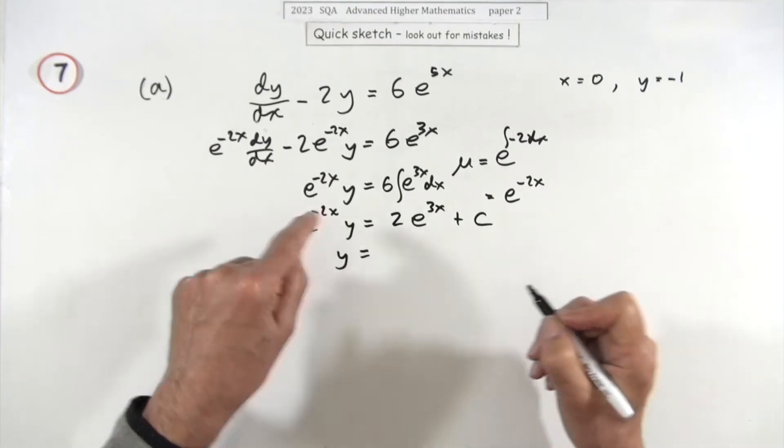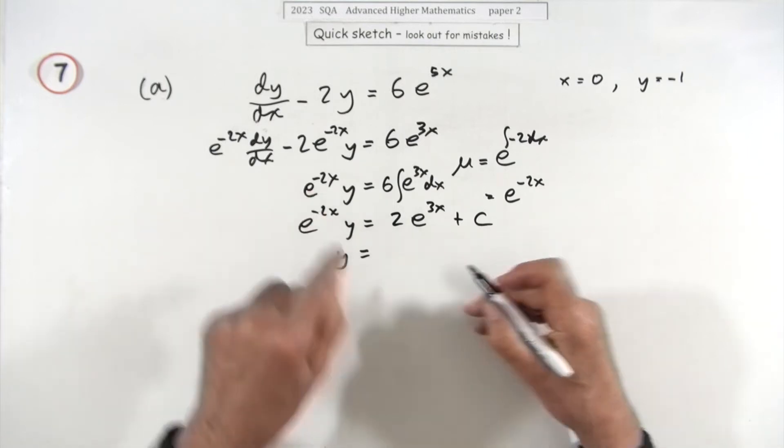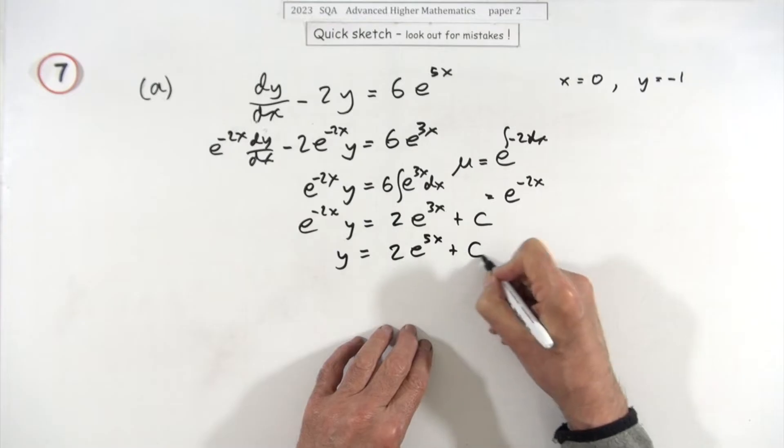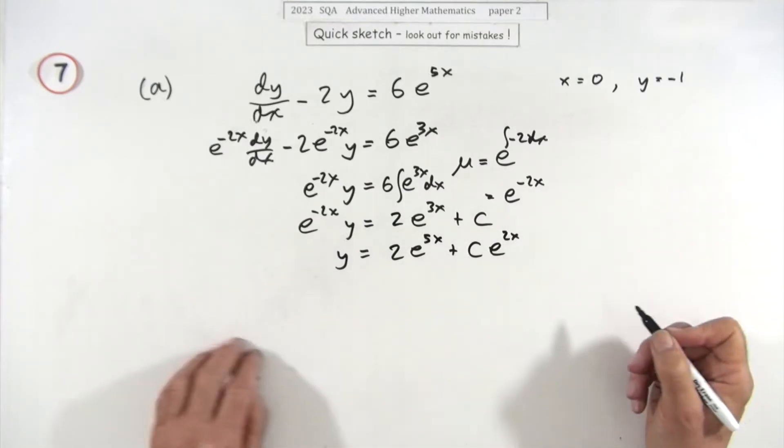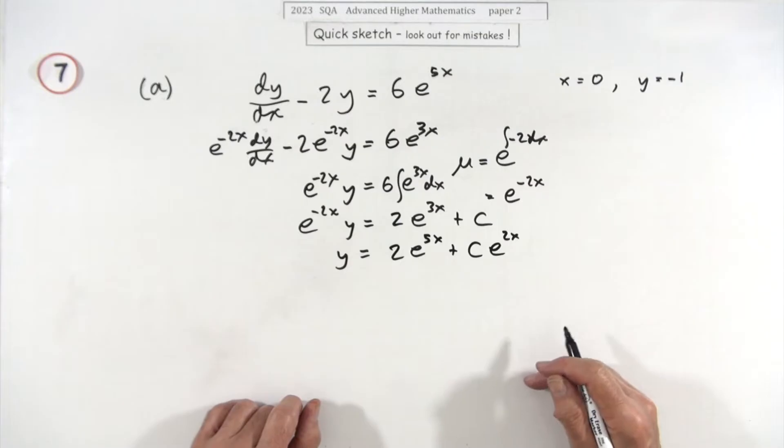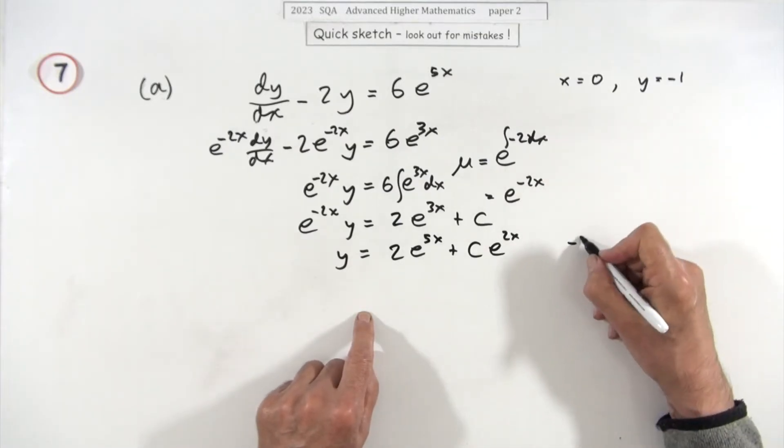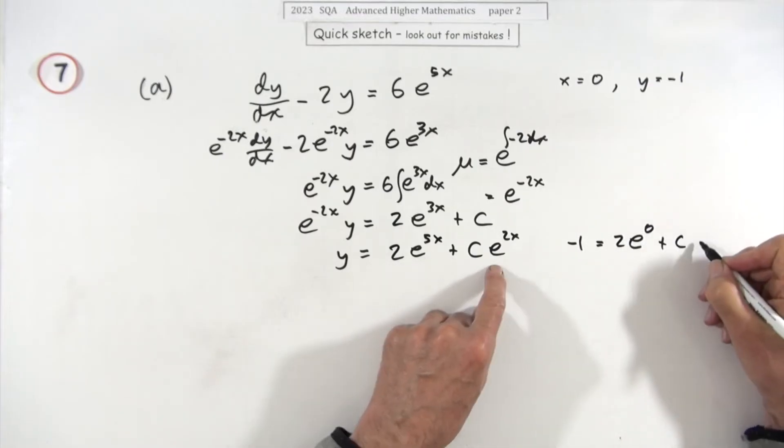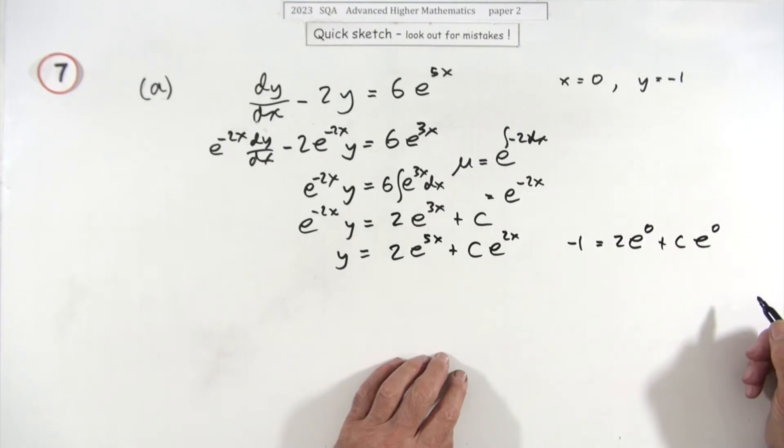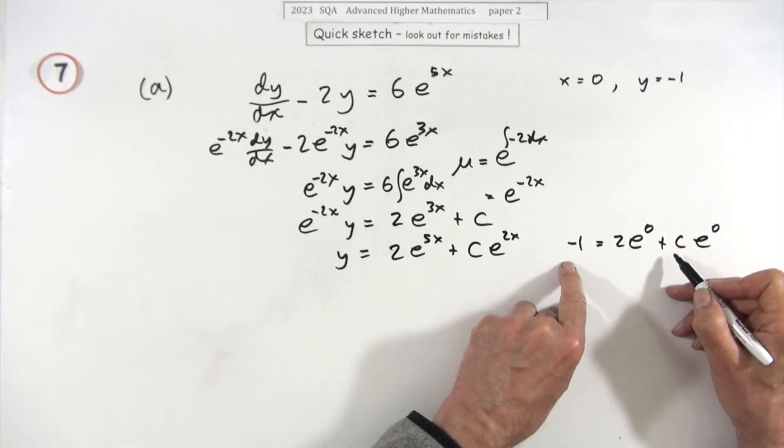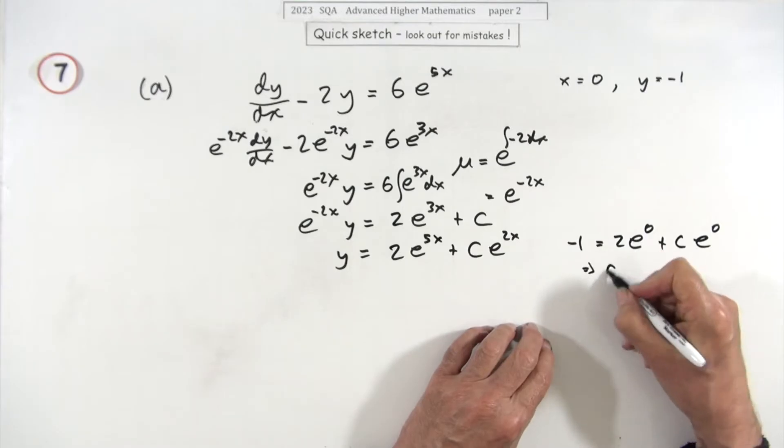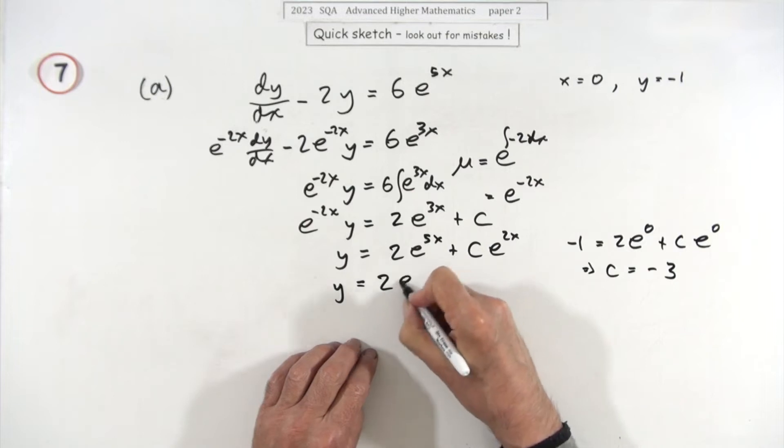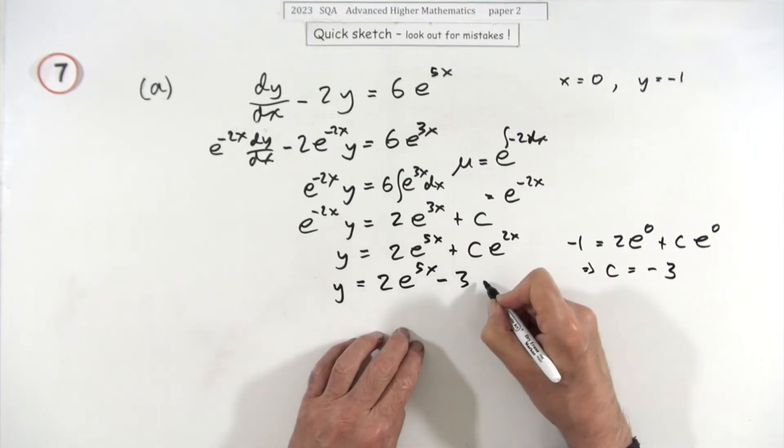So y is going to be—taking that across and dividing, which of course is the same as multiplying by e to the 2x—bumps that up to 5x, and that'll be c times that as well, e to the 2x. But now you have to figure out what that is. Well, we've got these initial conditions: you've got the negative 1 is equal to 2 times—when x is 0, that's 0—plus c times—when x is 0, that'll be 0. So since those are just 1s, that'll go across as a negative 3. So that tells you that c equals negative 3.